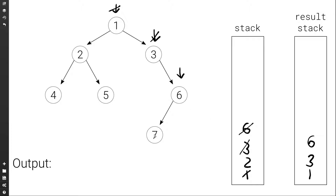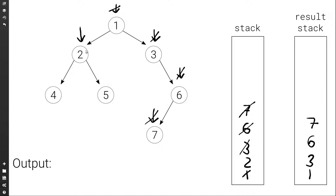Then we check does it have a left child — yes it does, so we're going to push it to the first stack. And we check does it have a right child — no it doesn't. So we're done with the six. We go back to the first stack, and we're going to set current to the top, which is seven. We will pop it from the first stack and push it to the result stack. Seven has no left child and no right child, so we're done with seven. We go back to the first stack, set current to the top, which is two. We pop it and push it to the result stack.